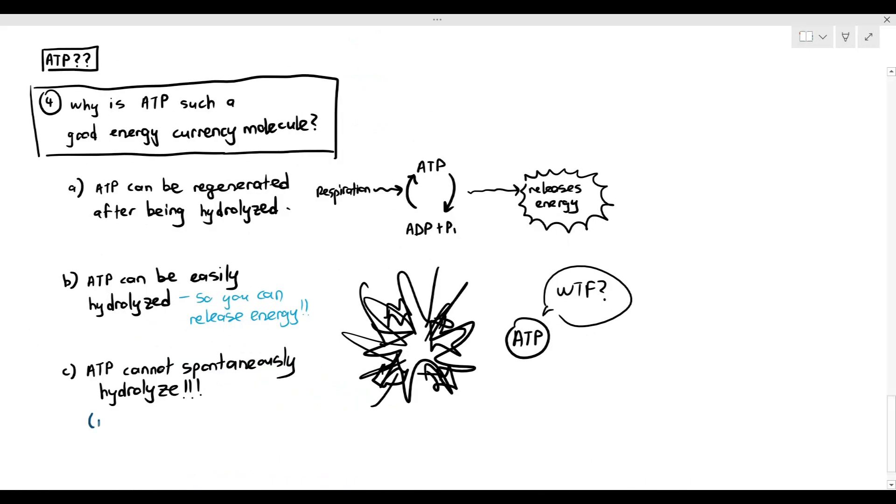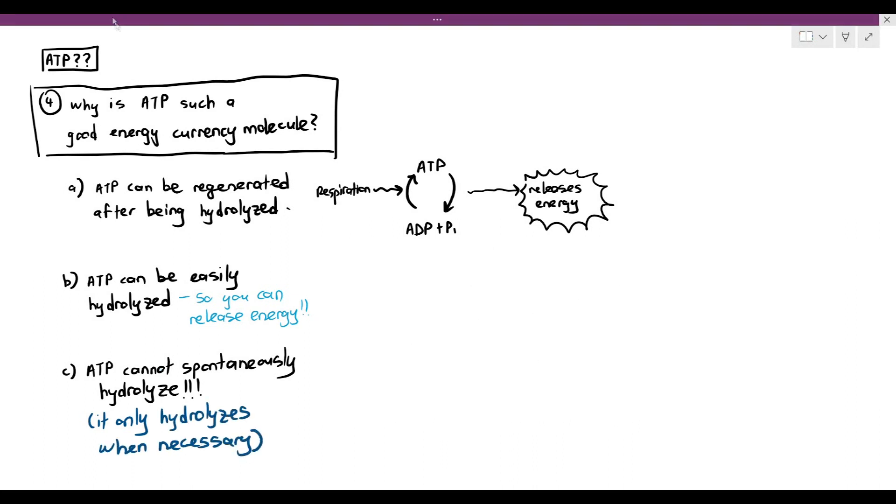So the cells will only hydrolyze ATP when necessary. It is a molecule that can easily get hydrolyzed, but it does not spontaneously hydrolyze. The reason is because for ATP to be hydrolyzed, it needs an enzyme to break it down. And the name of that enzyme is called ATPase.